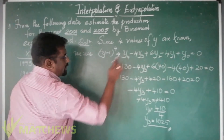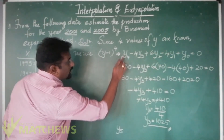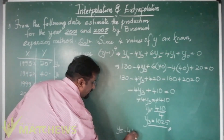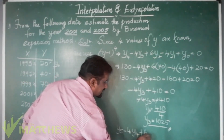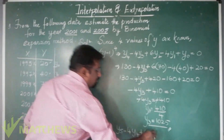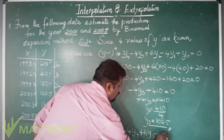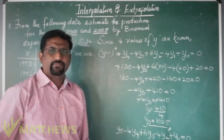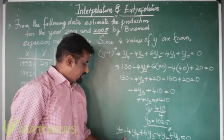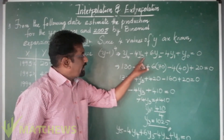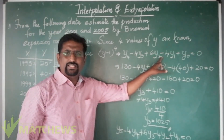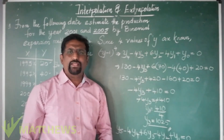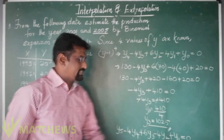The new expansion becomes: Y5 minus 4·Y4 plus 6·Y3 minus 4·Y2 plus Y1 equals 0. This is the formula for the next missing value. Writing it out fully: Y5 minus 4·Y4 plus 6·Y3 minus 4·Y2 plus Y1 equals 0.